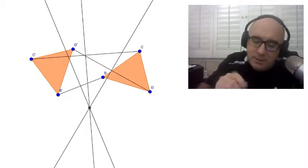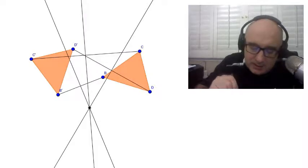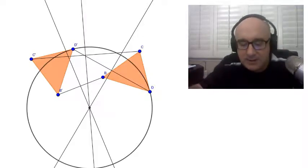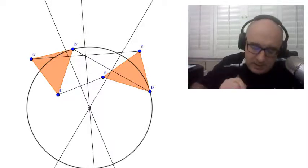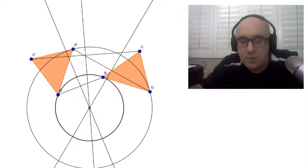Now just to show you, I'm going to pull out my circle tool and let's just create a circle. Now do you see how that circle goes through D and D', and do you see how this circle goes through B and B'?